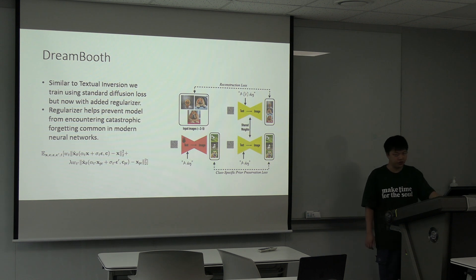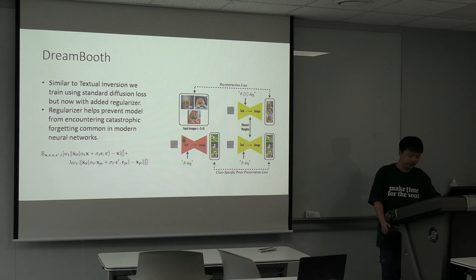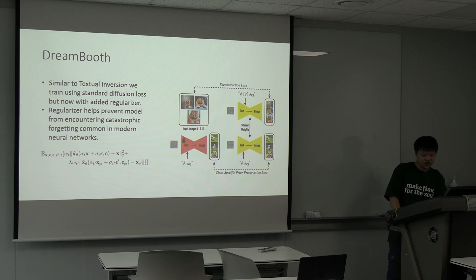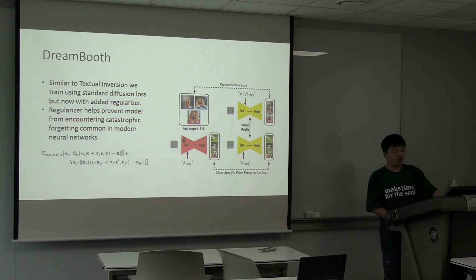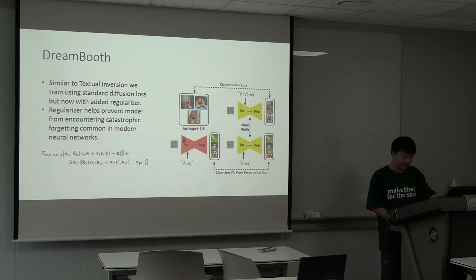Next, we'll go to Dreambooth. What Dreambooth does is actually really similar to Textual Inversion, with two differences. First, instead of just learning these text tokens, they also backpropagate through the entire weights, so the weights are not fixed anymore. And secondly, they have a regularization term.